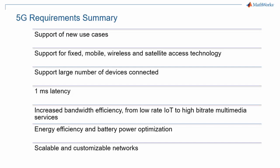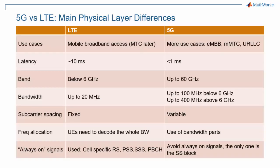In other episodes of this 5G Explained video series, we will point out how some of the physical layer features come in support of those requirements. While there are many commonalities between 5G NR and LTE — starting with the names of most physical channels and signals — there are also significant differences. This list is by no means exhaustive, and there is more discussion in other episodes, but these seven points are quite fundamental to understanding how LTE and 5G NR differ.